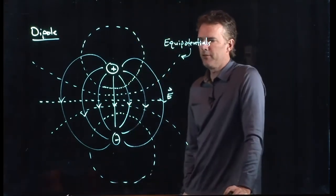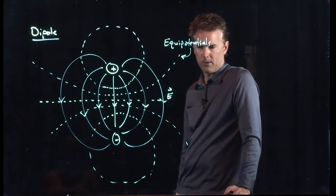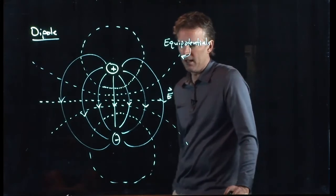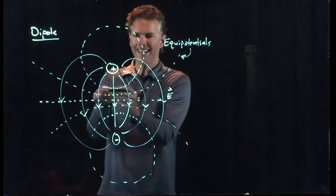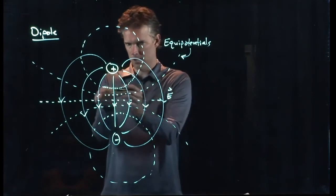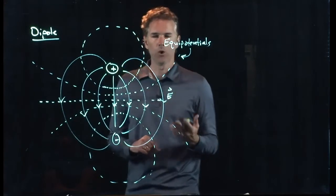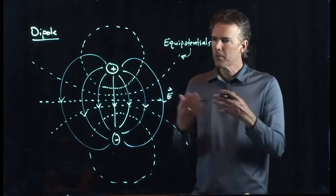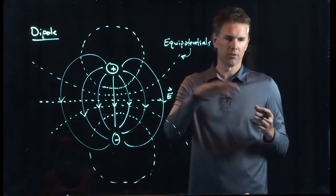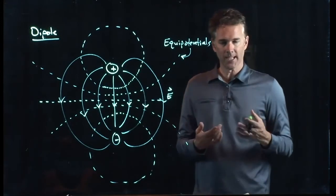Now, what's sort of interesting about an equipotential surface is since it's perpendicular to V, particles can move along those lines without having any work done on them. Because remember, in our work equation, it was Fd cosine theta. And if theta is 90 degrees...